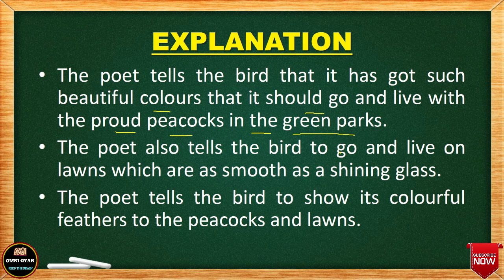The poet tells the bird it has got such beautiful, colorful wings — why does it stay lonely? Why doesn't it go and live with the proud peacocks? The peacock is also a very beautiful bird with beautiful feathers. The poet also tells the bird to go and live on lawns as smooth as a shining glass — those lawns which are very beautiful, clean and smooth.